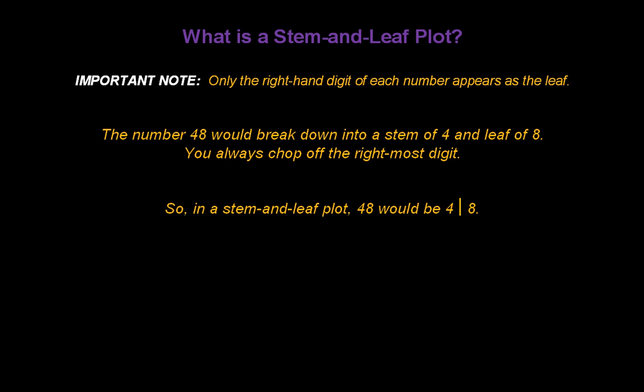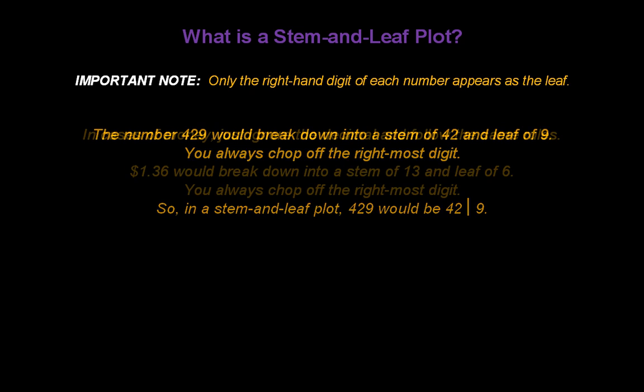So in a stem-and-leaf plot, 48 would be 4 vertical bar 8. The number 429 would break down into a stem of 42 and a leaf of 9. So in a stem-and-leaf plot, 429 would be written as 42 vertical bar 9.